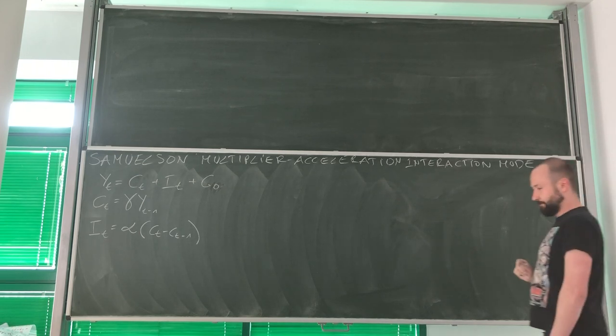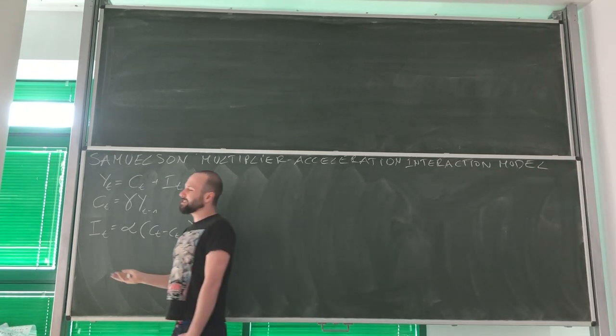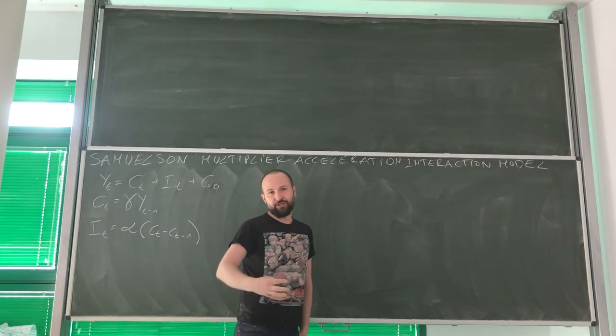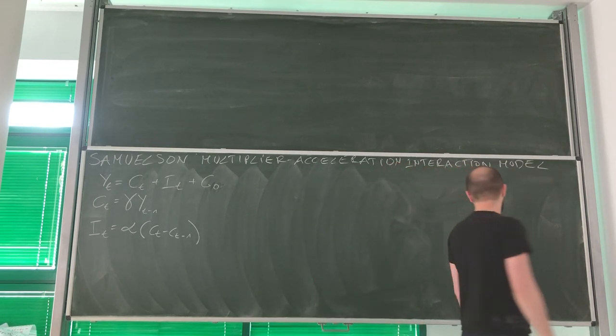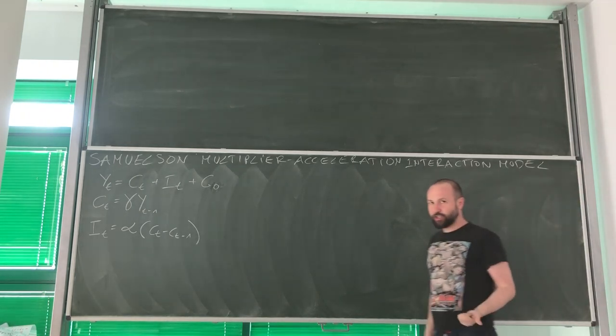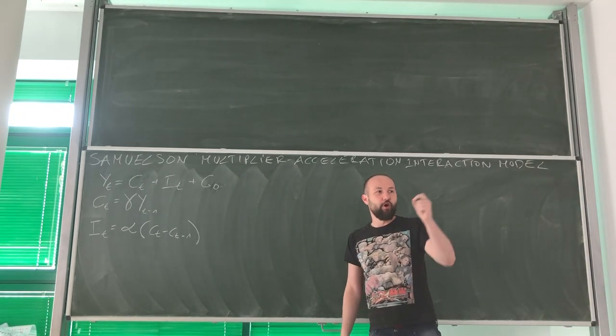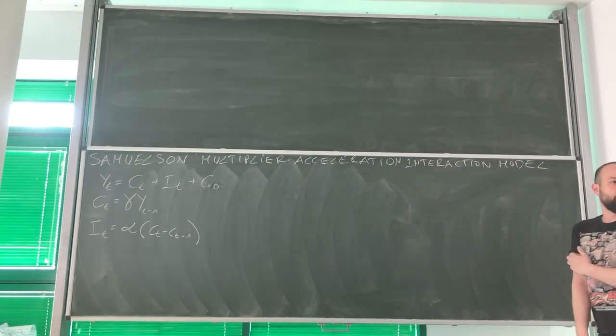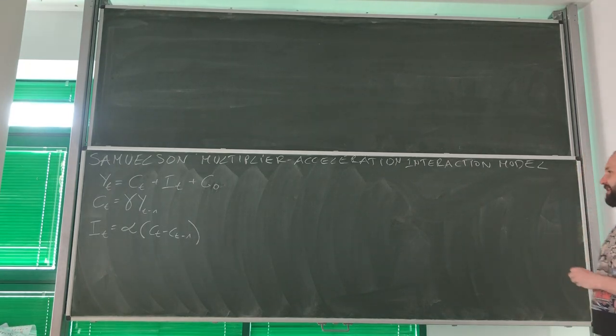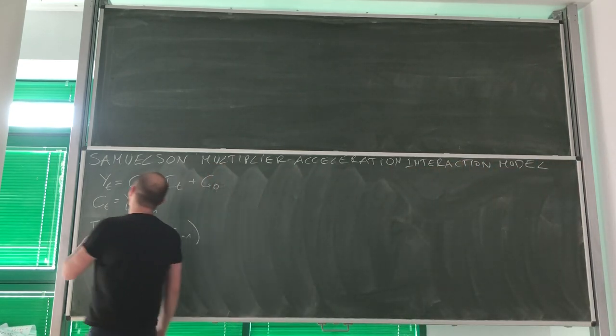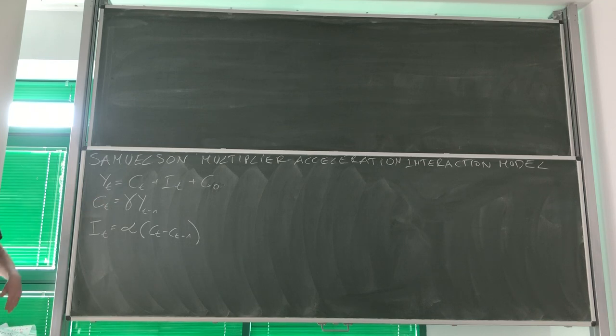Samuelson's multiplier-acceleration interaction model. This model for us is a little bit like going back to national income model, Keynesian model, Keynesian cross. However, now we are adding dimension of time and we are not only looking at what happens at a certain point.